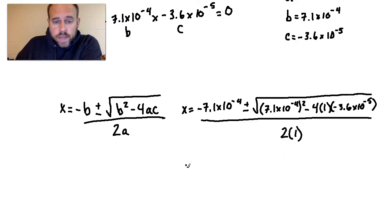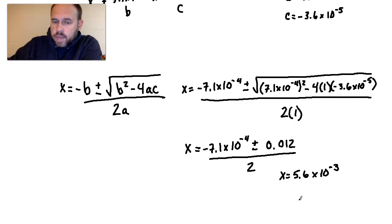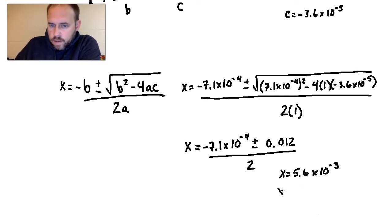So if you reduce that down or you solve for that, what you should end up with, kind of showing you a bit of a reduced form here is negative 7.1 times 10 to the negative 4th plus or minus, and what I have here when I worked it out was 0.012, and that's going to be over 2. So that means that x can be the following values. x can be 5.6 times 10 to the negative 3rd. And x can be negative 6.4 times 10 to the negative 3rd.